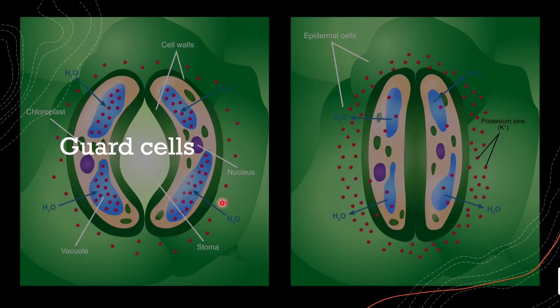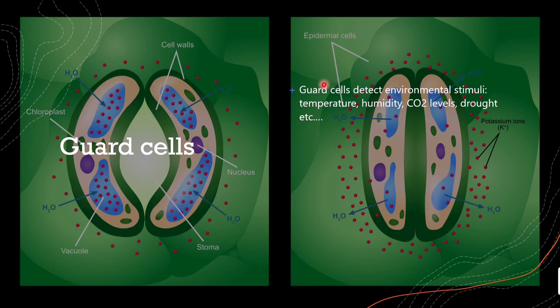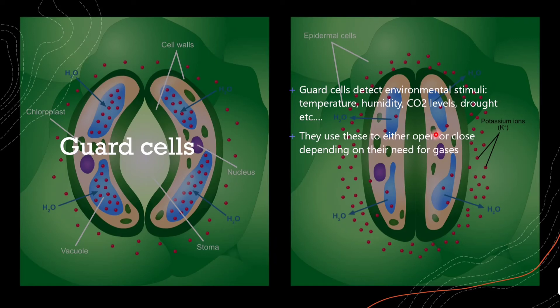Now moving on to guard cells. These are on the lower epidermis surrounding the stomata and control gas exchange. Guard cells detect environmental stimuli — this could be temperature, humidity, carbon dioxide levels, drought, and so on. When they detect these stimuli, they use them to either open or close, depending on the stimuli and the gases needed at that moment in time.